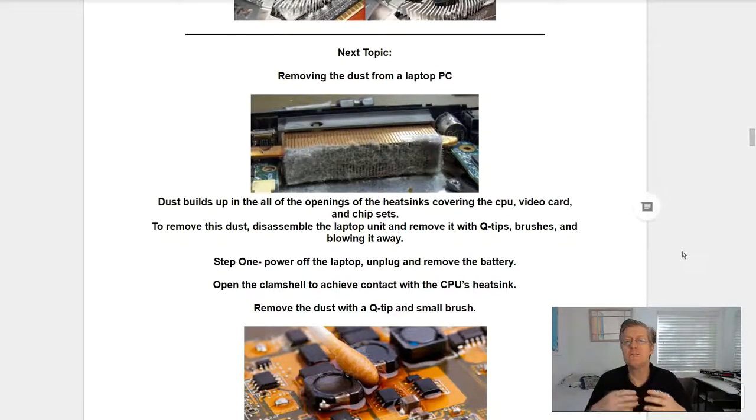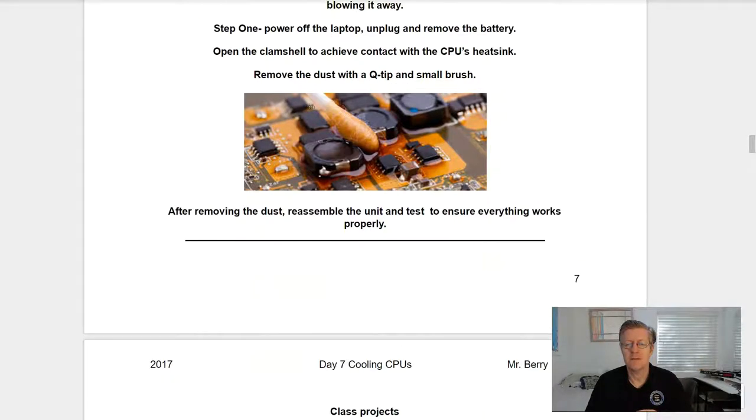Next topic, removing the dust from a laptop PC. Dust builds up in all of the openings of the heat sinks covering their CPU, video card and chipsets. To remove this dust, disassemble the laptop unit and remove it using q-tips, brushes and then blowing the dust away. Step one, power off the laptop, unplug it and also remove your battery. Open the clamshell to achieve contact with the CPU's heat sink. Remove the dust with a q-tip and small brush as seen here. After removing the dust, reassemble the unit and test to ensure that everything works properly.